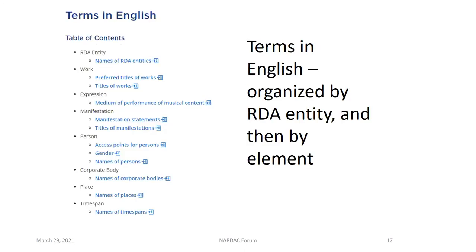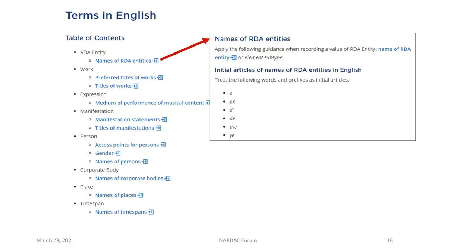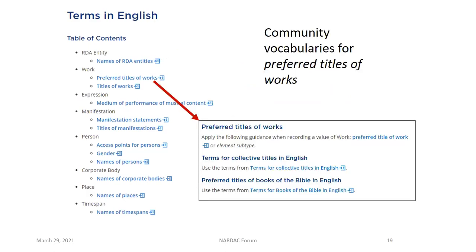With this new organization, one can see the benefit when cataloging material in a particular language: you can see all of the conventions that apply to that language in one spot, whether for abbreviations, capitalization, initial articles, and so on. If you click on Terms in English, the further organization is parallel to the Toolkit's organization by RDA entity and then by element. The conventions applicable broadly to many entities are under the broader RDA entity heading, and we find the community vocabulary for initial articles applicable to the names and titles of various RDA entities.